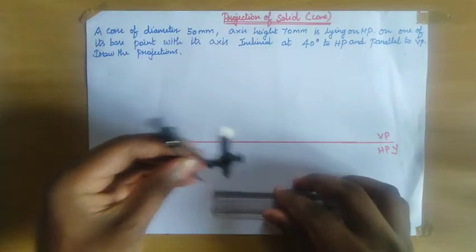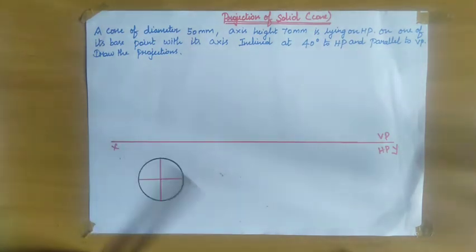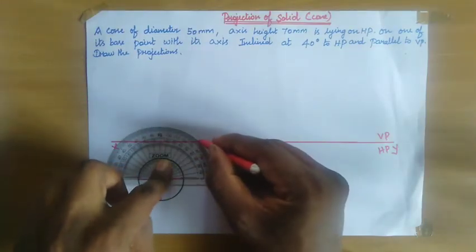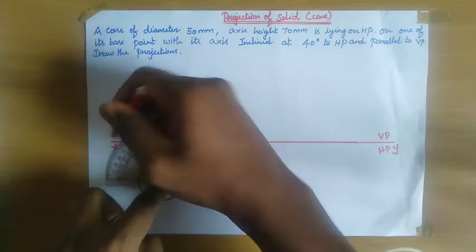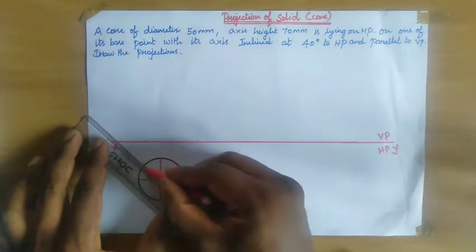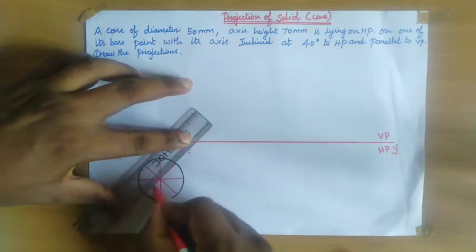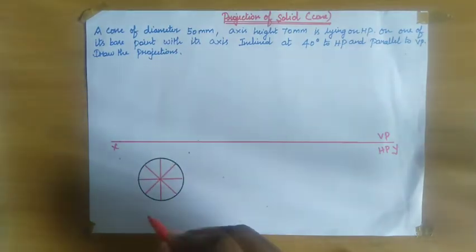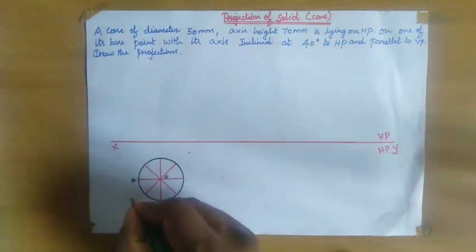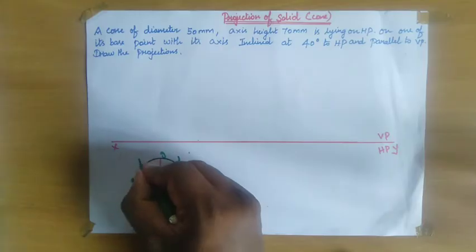Now we need to divide the circle. Place your protractor here and take 45 degrees, and again take 45 degrees. We have divided the circle into 8 equal halves. Now name the center point as O, and the points around the circle as A, B, C, D, E, F, G, and H.